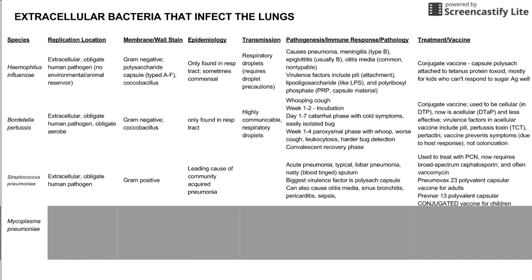There are vaccines for Streptococcus pneumoniae. Pneumovax 23 is a polyvalent capsular vaccine protecting against 23 variants, used for adults. For children, there is a conjugated vaccine called Prevnar 13, which protects against 13 strains. Conjugated vaccines are better for children because children do not have as strong a response to polysaccharide antigens alone.